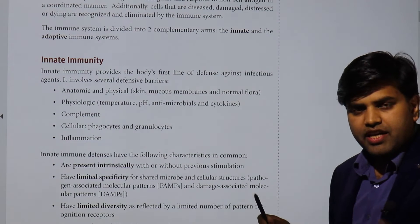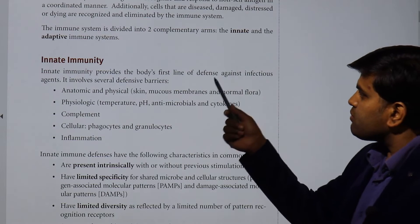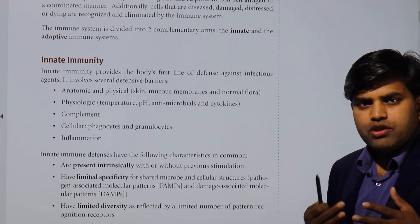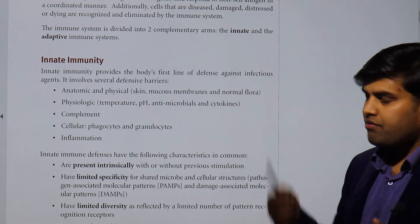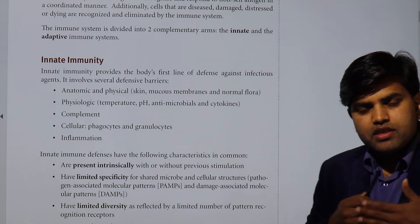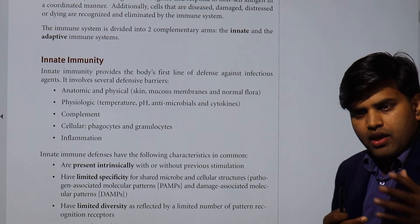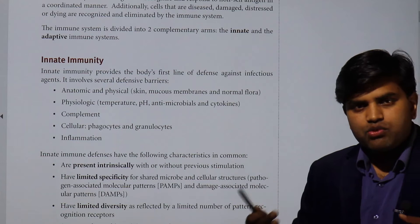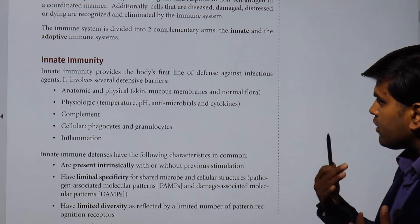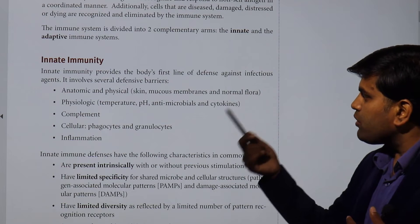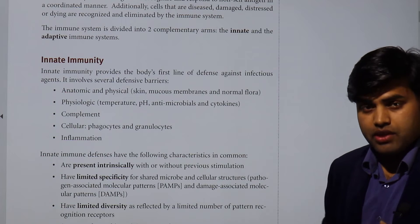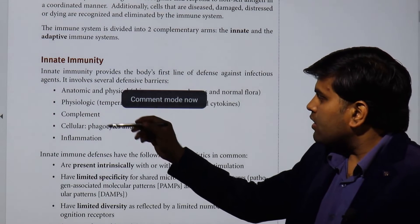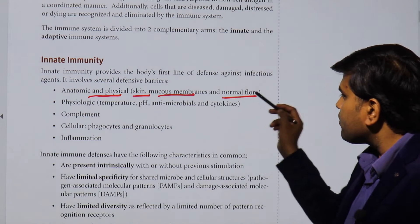The innate immunity provides the body's first line of defense against infection, as it involves several defense barriers. Innate immunity includes anatomical and physical barriers such as the skin, mucous membranes, and normal flora. The skin prevents the entry of any organism inside your body — that is the physical barrier that prevents microbes from entering. If microbes cannot enter inside your body, this acts as the first line of defense.